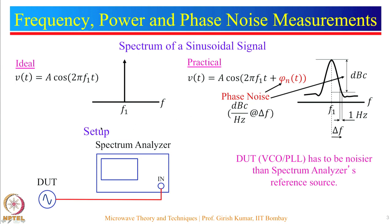The setup is quite simple. The DUT, which is typically a VCO, signal generator, or a PLL, is connected to the input of a spectrum analyzer and the measurements can be done accordingly. For phase noise measurements, the DUT which is a VCO or PLL has to be noisier than the spectrum analyzer's reference source; only then can the spectrum analyzer measure the phase noise of the DUT.